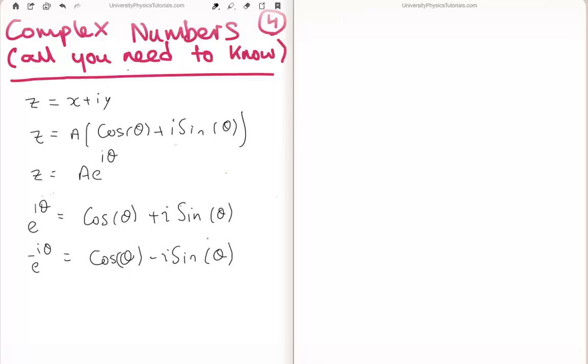Now how do we go from here to get our cos and sine on their own? Well if we add e to the i theta and e to the minus i theta, what do we get? I'm just going to write the following. We're going to get cos plus i sine plus cos minus i sine.